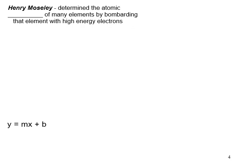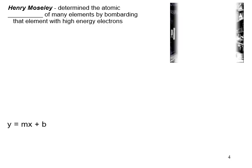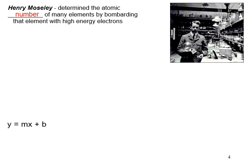Henry Moseley was another one of our scientists. He was active during World War Two. He actually died during World War Two which was kind of sad because he found the relationship between the atomic number and how to order that in the periodic table. So Henry Moseley determined the atomic number of many elements by bombarding that element with high energy electrons. If you remember Rutherford's experiment, he was bombarding gold with alpha particles and then seeing how those alpha particles were deflected or bounced back. And that gave us evidence for the nucleus of the atom.